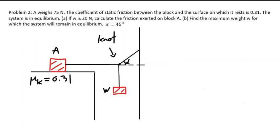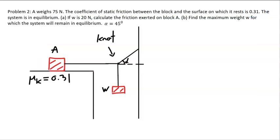Problem 2. Weight A is 75 newtons. The coefficient of static friction between the block and the surface is 0.31. The entire system is in equilibrium, meaning no acceleration. The small hanging weight w is 20 newtons. We need to calculate first the friction exerted on block A from the surface.